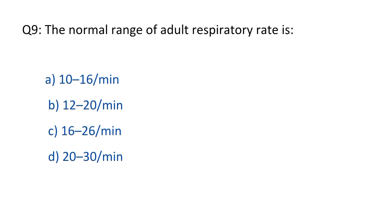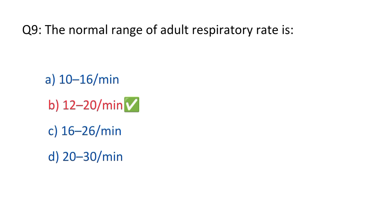Question No. 9. The normal range of adult respiratory rate is? The right option is option B, 12 to 20 per minute.